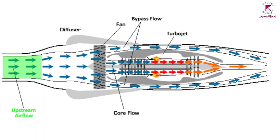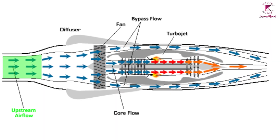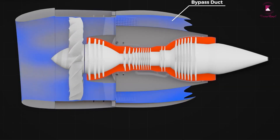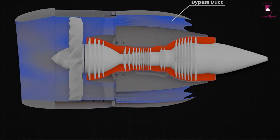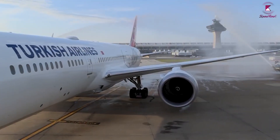The speed of the air flowing by the fan is slightly faster than the speed of the free airstream. This flow of air is known as the bypass or fan airflow. That is how a turbofan engine works.